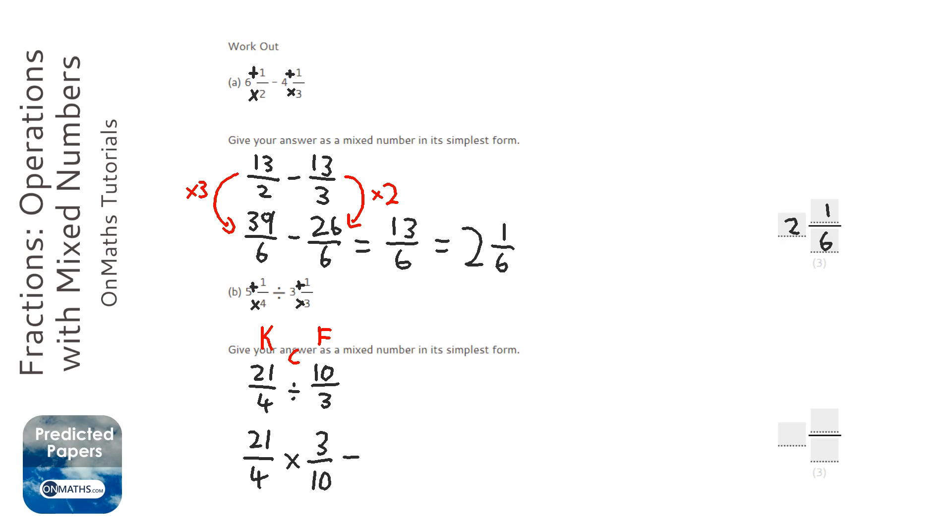Now, what we're going to do now is we just simply times the tops and times the bottoms. And that's all we've got to do. So it's going to be sixty-three over forty.